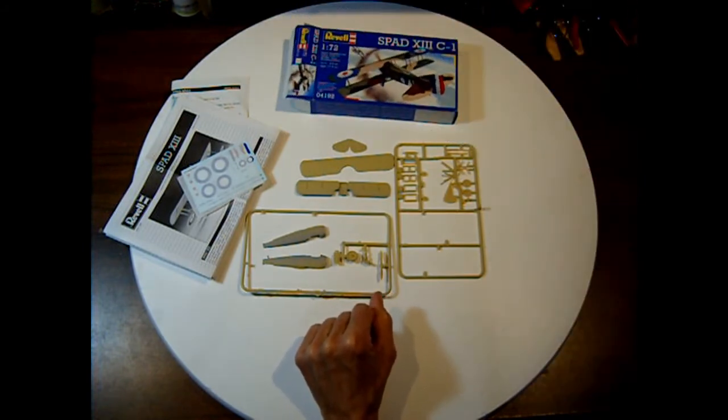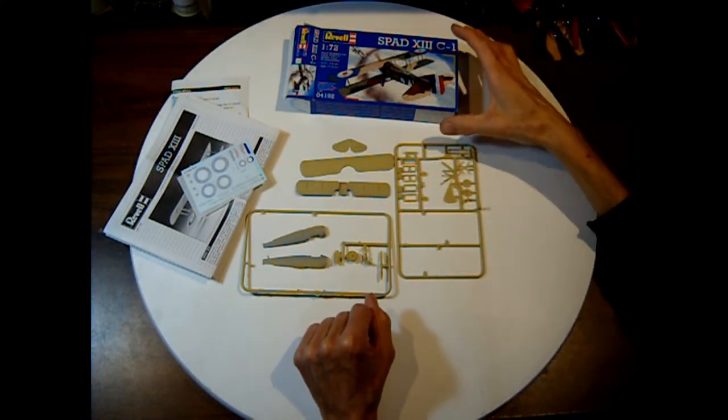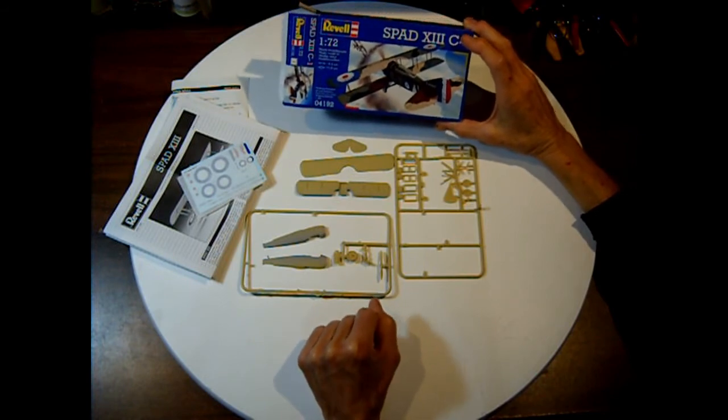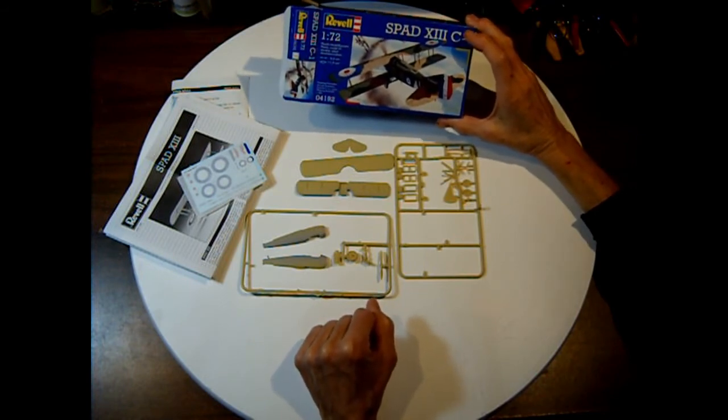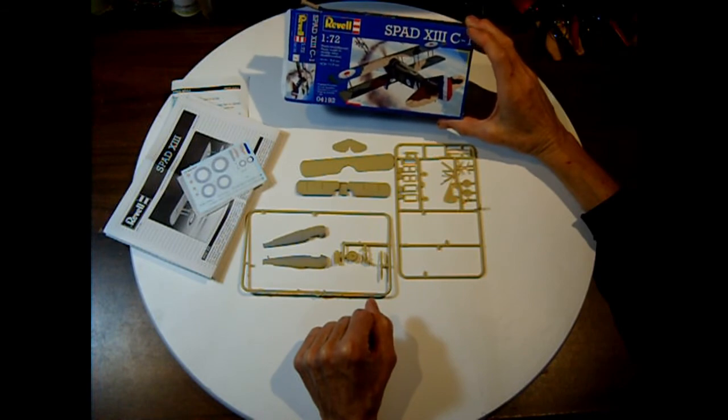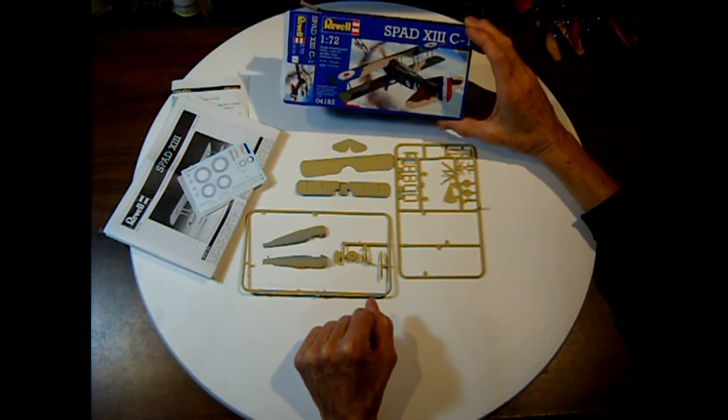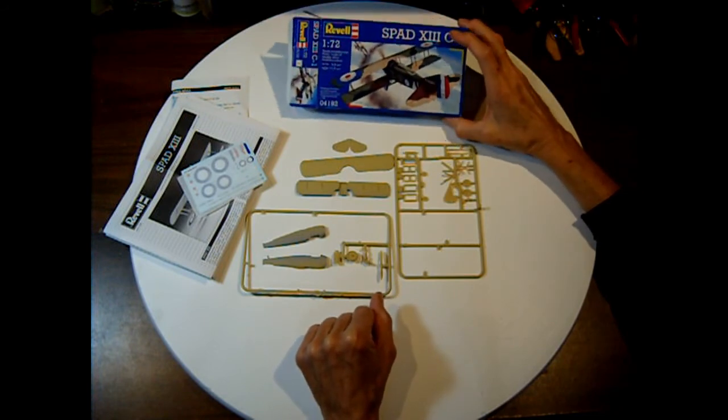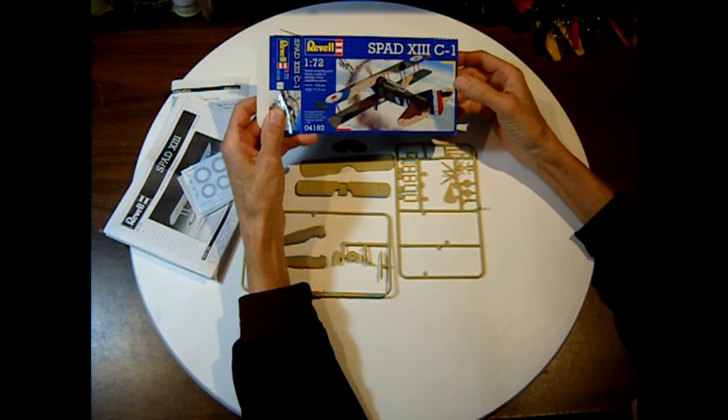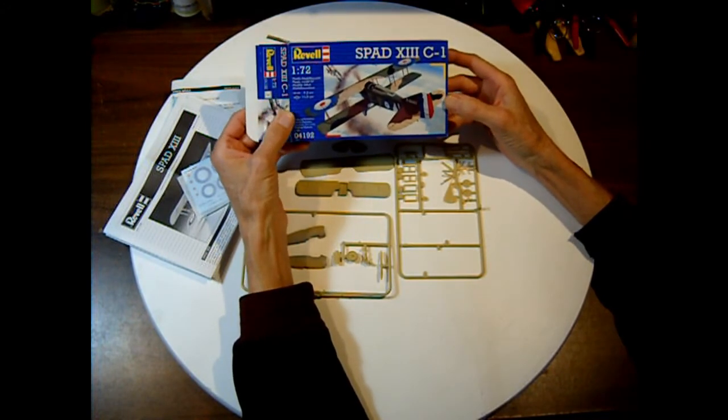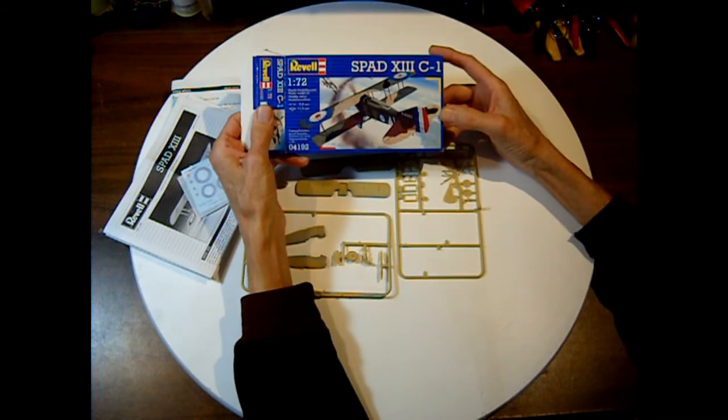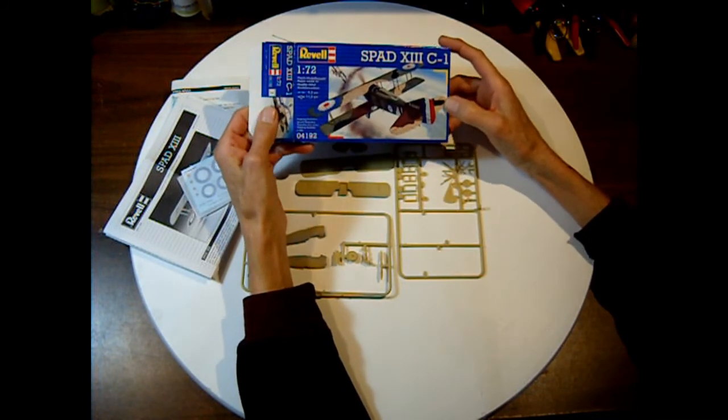But they're neat. I mean, you can get larger scale models, 1/48th, 1/32nd scale of these. But they're a lot bigger and they take up a lot more space if you have limited shelf space to display them. And since I am going to build several different World War I biplanes, I would like to have shelf space for them. So that's my review of the Revell 1/72nd scale SPAD 13C1. Thanks for watching.